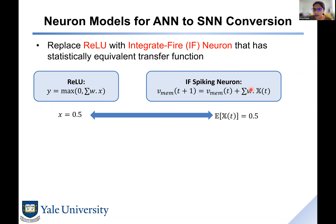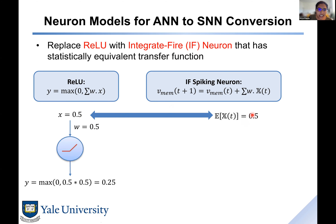If input x is 0.5, then the expected value of x over all time steps — the average of total spikes divided by total time steps — should equal 0.5. That's what rate coding achieves: the statistical transfer is accomplished by rate coding. The question then becomes: given a neuron that is a ReLU neuron receiving input x multiplied by weights, how does this conversion work mathematically?